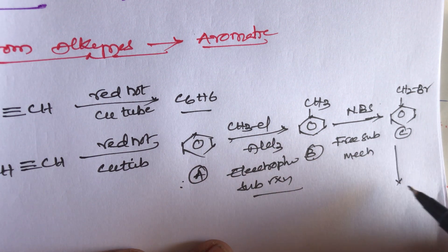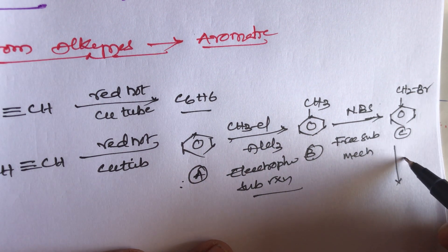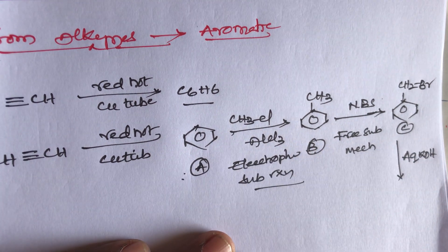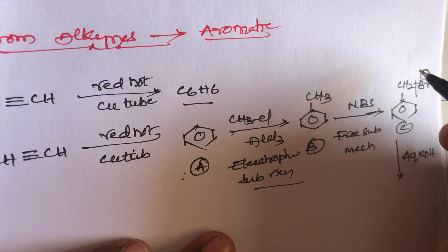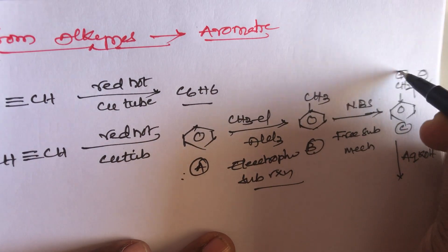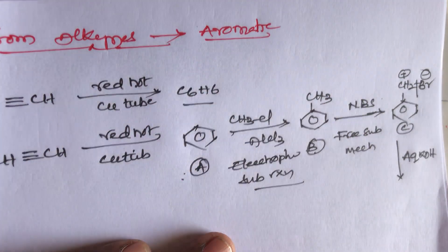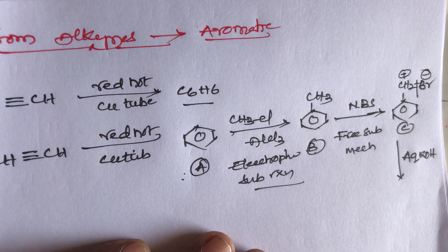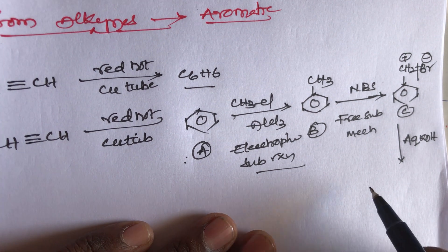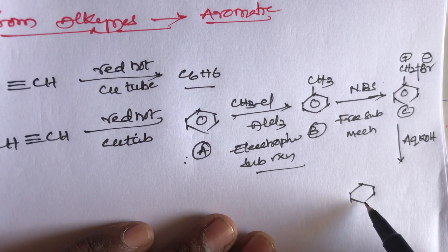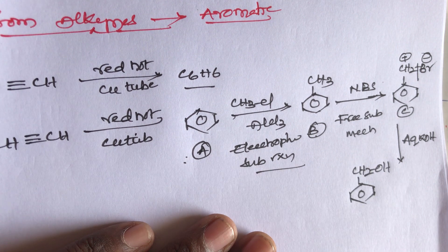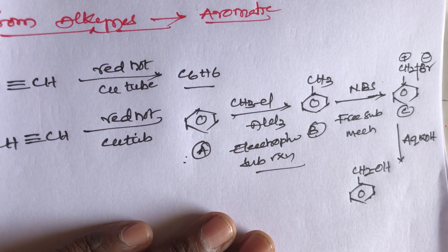This CH₂Br — benzyl bromide — reacts with aqueous KOH. Here Br⁻ and CH₂⁺ — a carbocation — are formed, and nucleophilic substitution reaction occurs. We get the product benzyl alcohol — CH₂OH — benzyl alcohol will be formed.